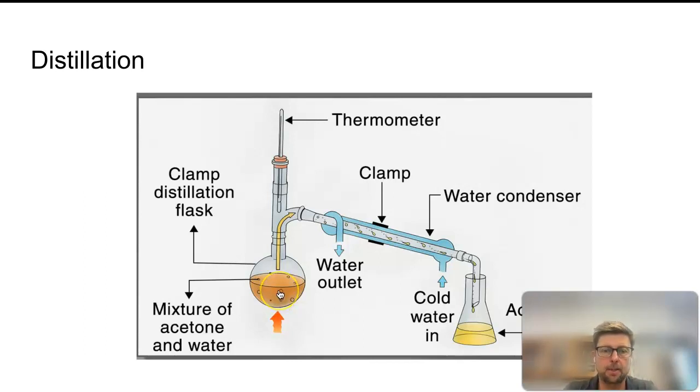As this boils and the acetone first is evaporated, those vapors will make their way to this condenser where cool water flows up from the bottom around the outside of the condenser and then flows out through the top. The cool water will allow that acetone to condense into its liquid form.